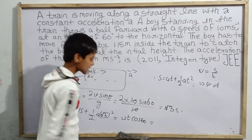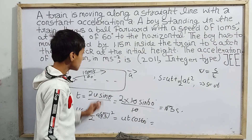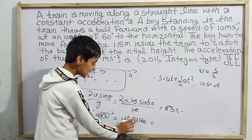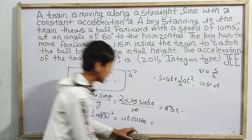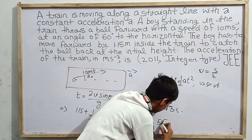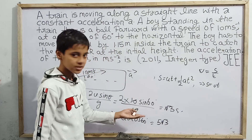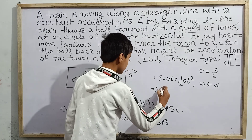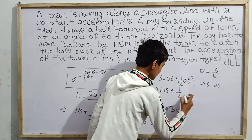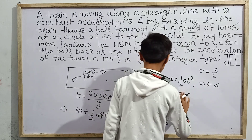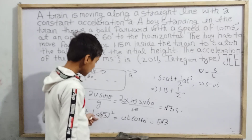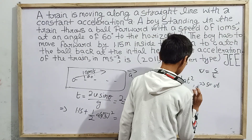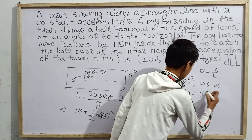Computing ut cos 60°: initial velocity u = 10 m/s, time t = √3 s, cos 60° = 1/2. So: 10 × √3 × (1/2) = 5√3. The equation becomes: 1.15 + ½ × a × (√3)² = 5√3, which simplifies to 1.15 + (3a/2) = 5√3.